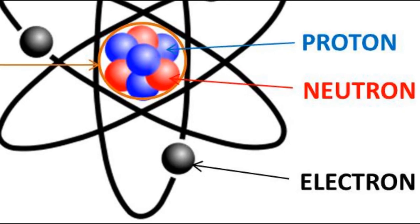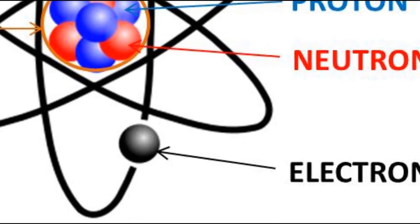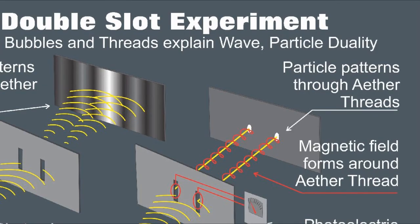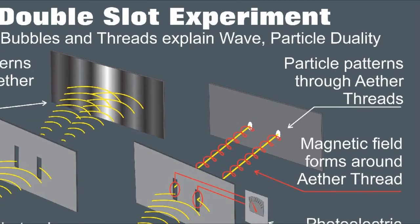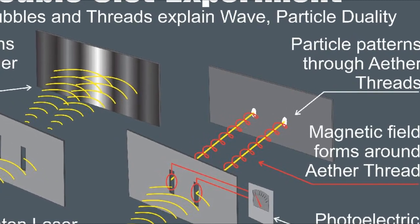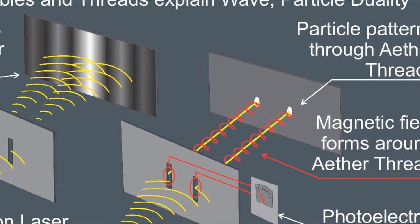When the double-slit experiment was repeated using electrons instead of photons, the results were the same. Without the sensors hooked up, the electrons behaved like waves and formed interference patterns. With the sensors hooked up and taking measurements, the electrons suddenly went back to behaving like particles and formed blot patterns.